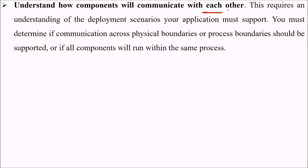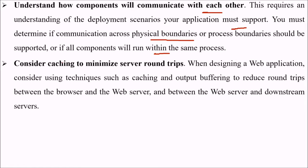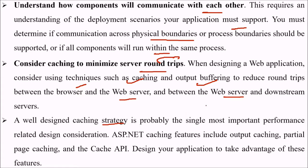We need to understand how components will communicate with each other, which requires understanding the deployment scenarios the application must support. We must determine if communication across physical or process boundaries should be supported or if all components will run within the same process. Consider caching to minimize server round trips. When designing a web application, use techniques such as output buffering to reduce round trips between the browser and web server. In ASP.NET, caching features include output caching, partial page caching, and cache API.